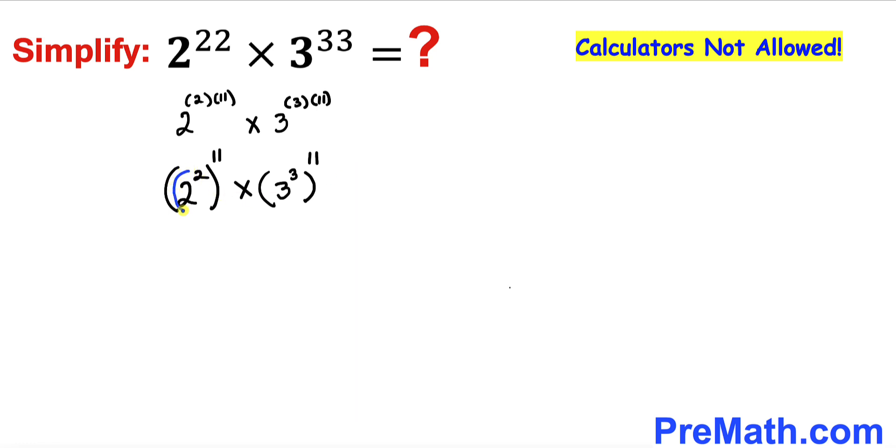And now let's focus on this 2 power 2 that is same as writing 4. And likewise let's focus on this 3 power 3. This could be written as 27. So therefore this thing could be written as 4 power 11 times 27 power 11.